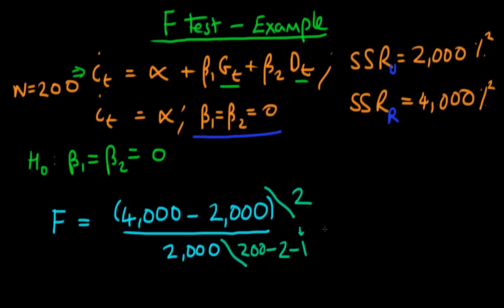Under the null hypothesis, this value follows a sampling distribution given by an F-statistic, which depends on two degrees of freedom. In this case, the first degree of freedom is two and the second degree of freedom is 197.